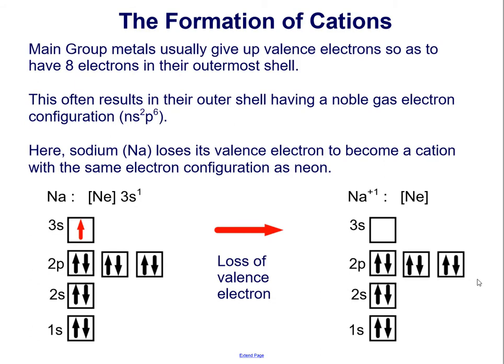The formation of cations. Main group metals usually give up valence electrons so as to have 8 electrons in their outermost shell. This often results in their outer shell having a noble gas electron configuration, ns²p⁶. Here, sodium loses its valence electron to become a cation with the same electron configuration as neon. So here's the valence electron of sodium. It's lost, and with its loss, it has an electron configuration that's identical to the noble gas neon.